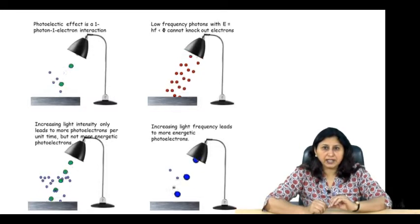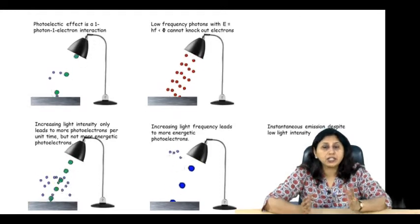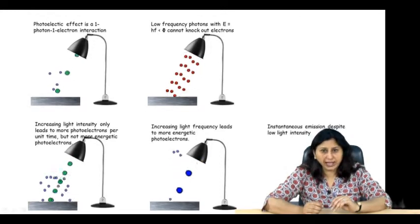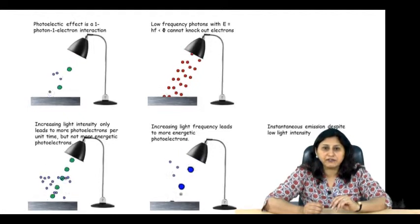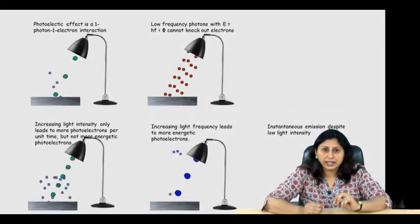Before photoelectric effect, physicists were convinced that light could be fully described by wave. But unfortunately, the photoelectric effect was impossible to understand in terms of classical wave description of light. A particle nature of light is necessary.